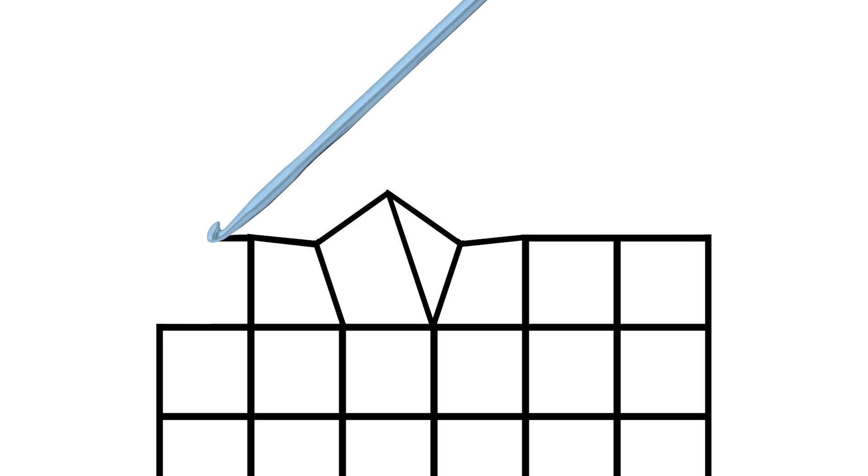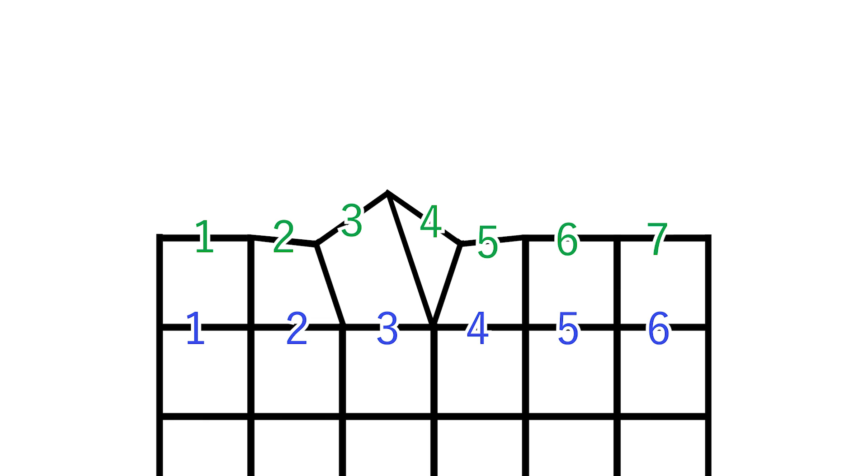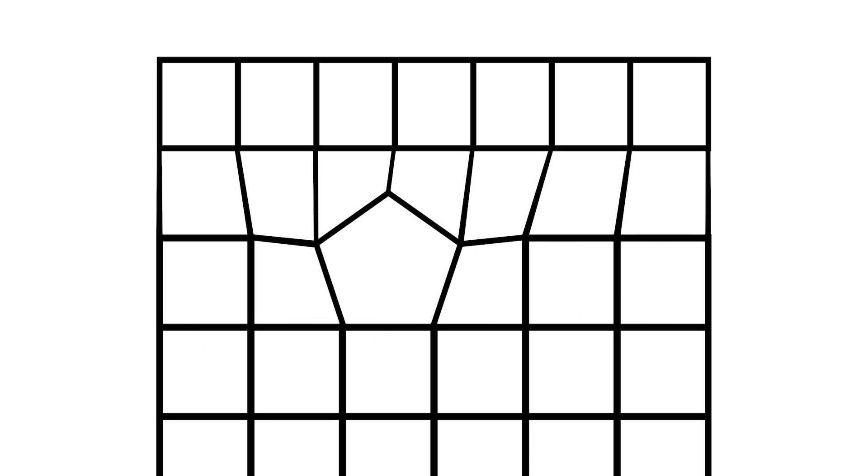The next kind of stitch is called an increase. That's when you put your hook through the next stitch twice, which creates an extra stitch in the next row. In other words, if we add six stitches in this row, we'll be doing seven in the next row. It's as if we added a pentagon into the square grid. And maybe you can see where I'm going with this.